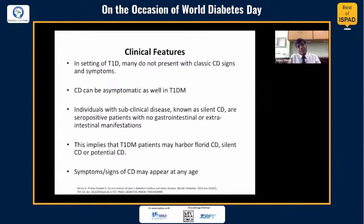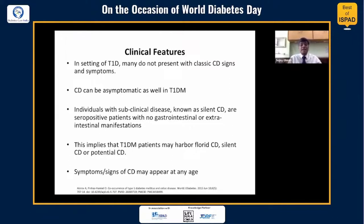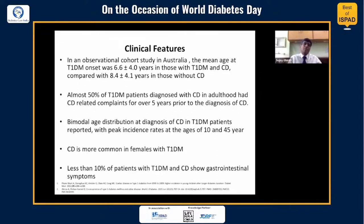In terms of clinical presentation in the setting of type 1 diabetes, many patients often do not necessarily have the classic signs and symptoms of celiac — many might actually be asymptomatic. Individuals with subclinical disease, known as silent celiacs, are seropositive patients with no gastrointestinal or extraintestinal manifestation. This implies that type 1 patients may harbor florid celiac disease which might be silent or potential celiac. The signs and symptoms might appear at any age, and the courses of celiac and type 1 do not necessarily run a parallel course.